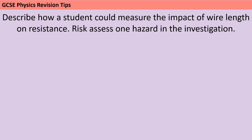Before you start writing a method for one of the required practicals, or any investigation in the science exams, it's a good idea to identify explicitly what the independent and dependent variables are. Because if you've written a method that doesn't include changing the independent variable, or doesn't include measuring the dependent variable, then you're going to be capped at quite a low mark, even if you've put in lots of other lovely detail.